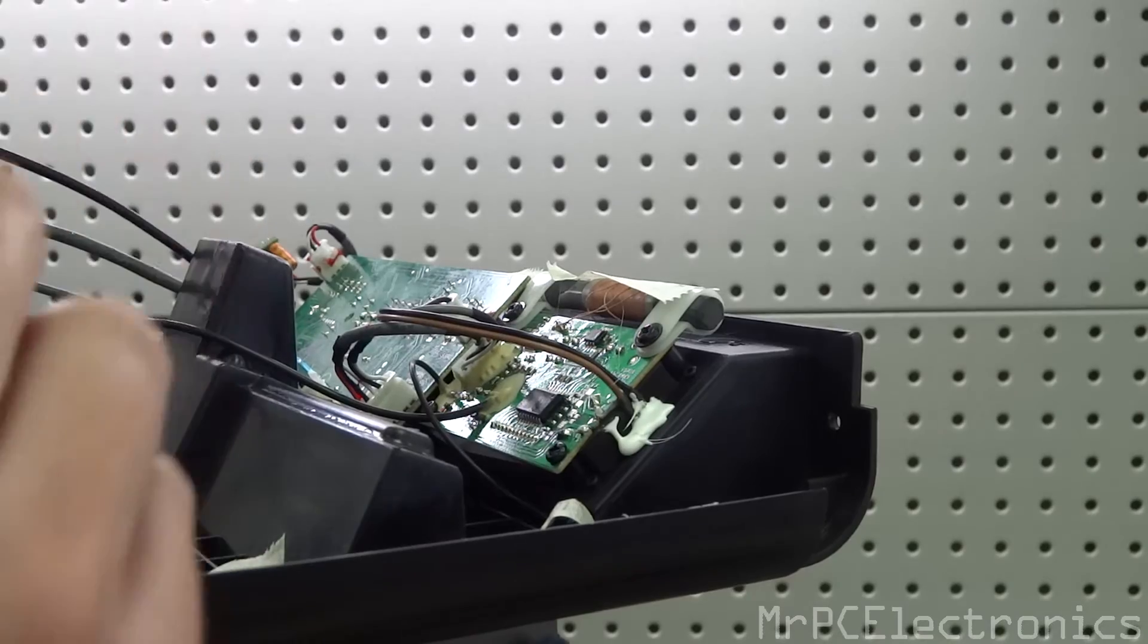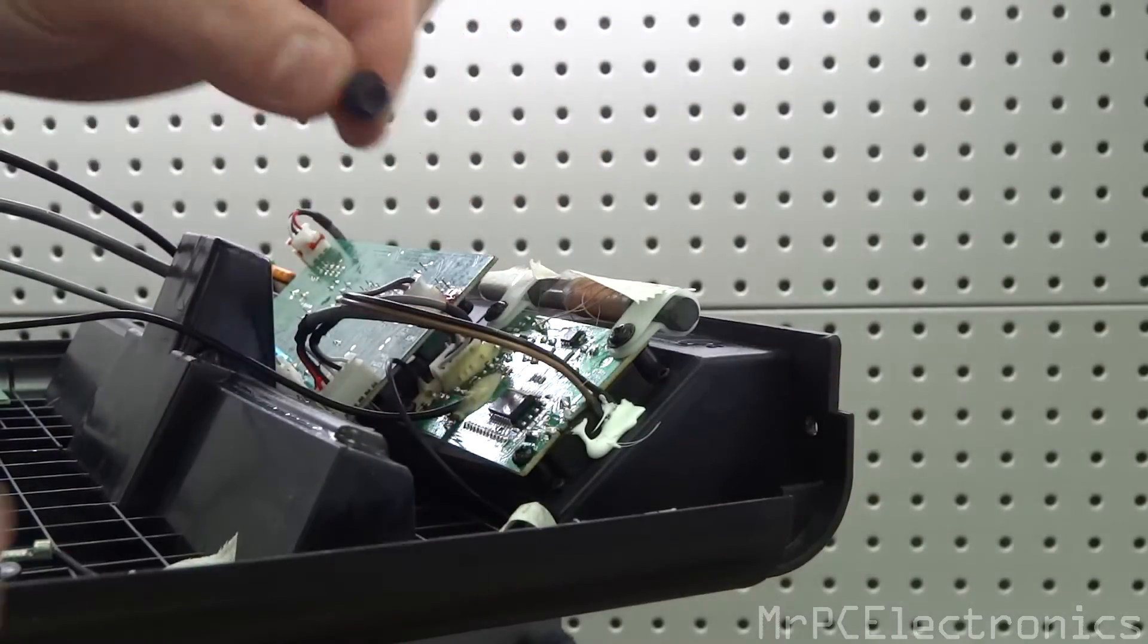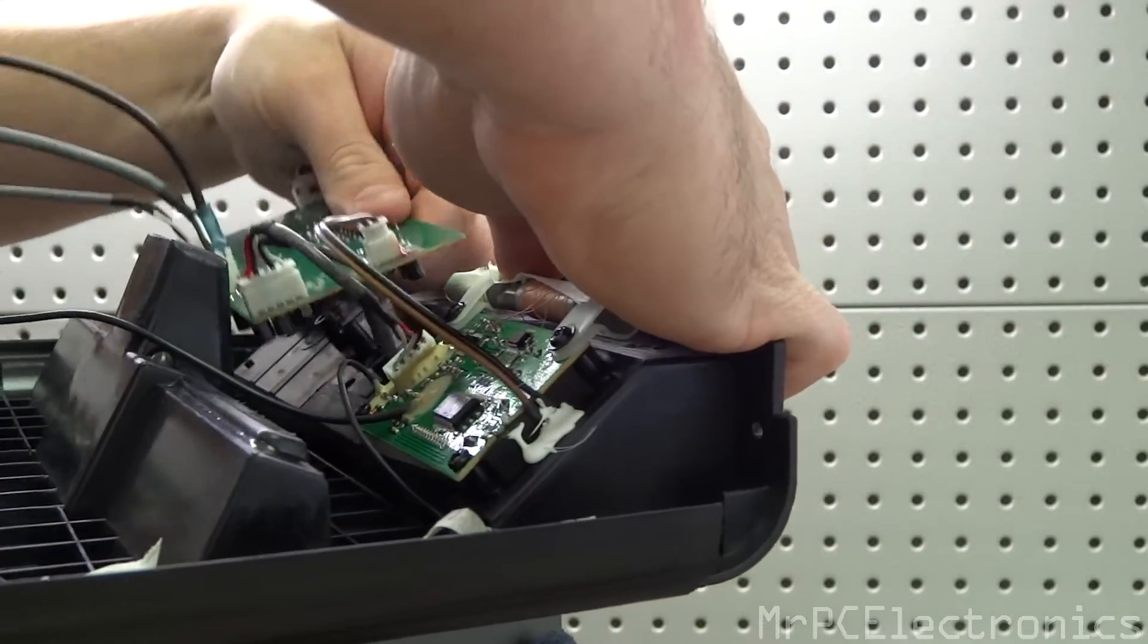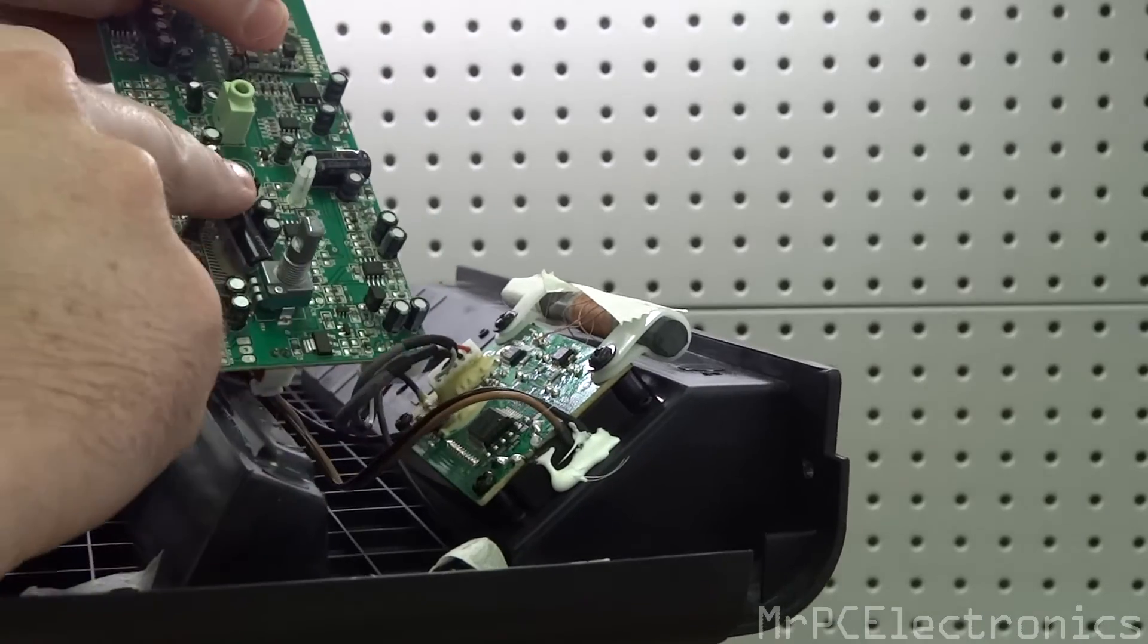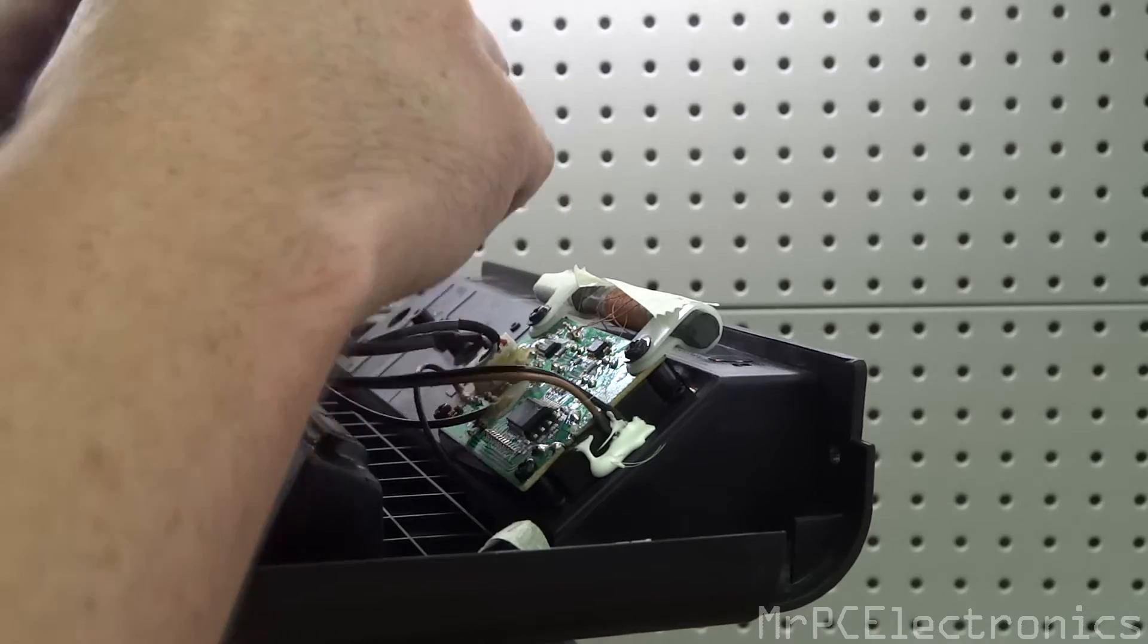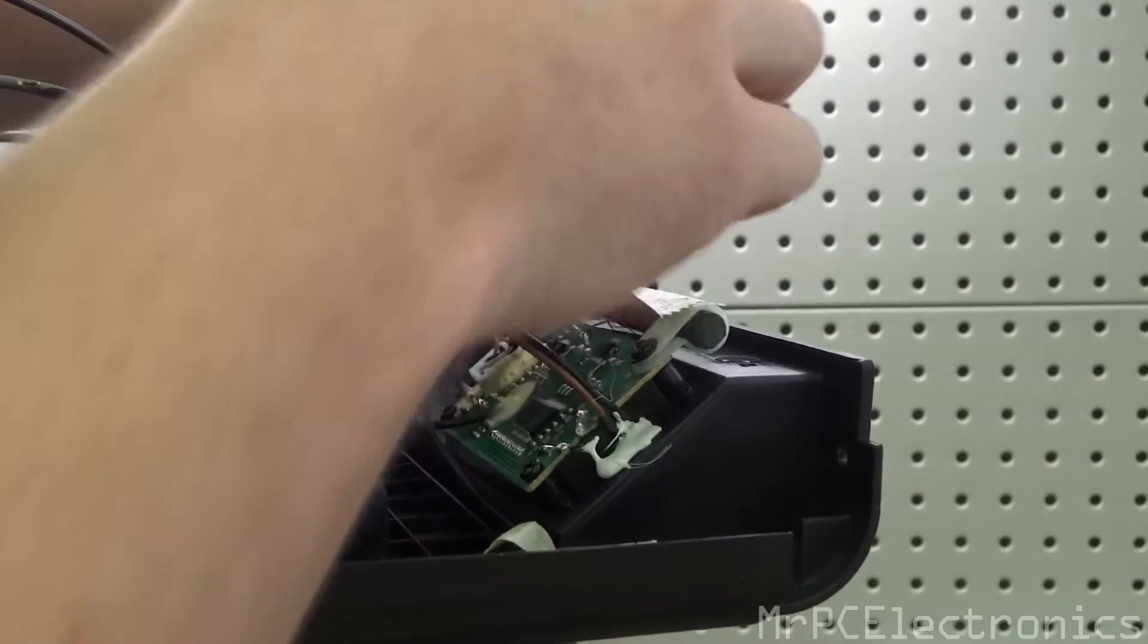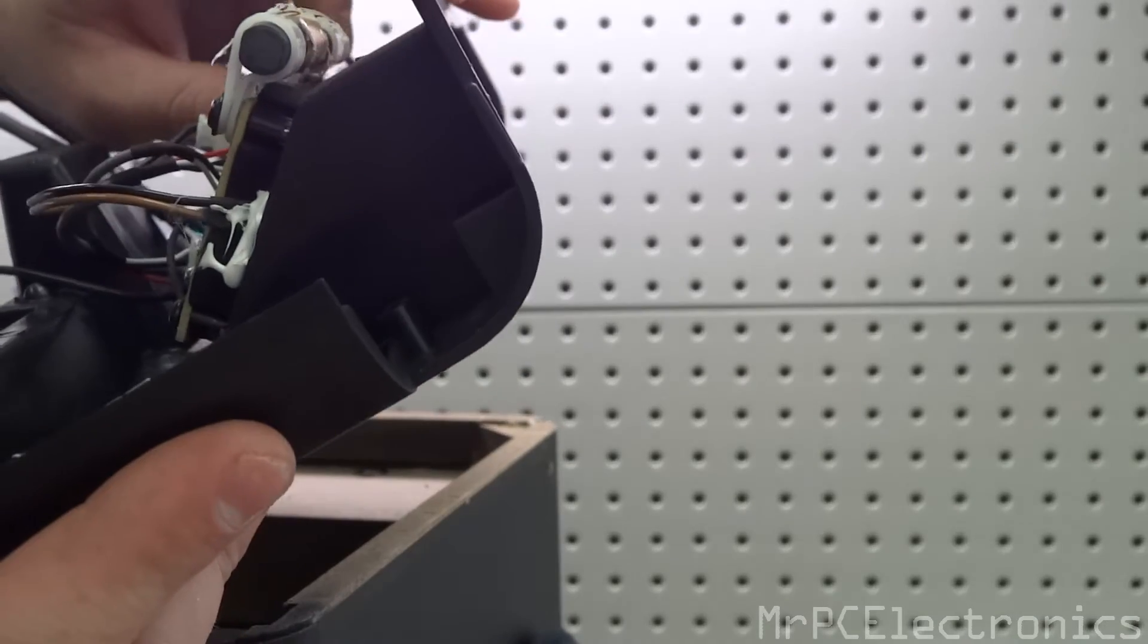Now one thing I forgot to mention is don't forget to put this Bluetooth button in. It's just this little button right here. You're going to want to set it right here on this little square. So put the square over it and then gently hold it and put it in there because you have to have it in there or else you can't put it back in.